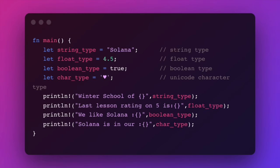We can define variables in Rust using the let keyword. Keep in mind that Rust is a statically typed language, which means the compiler needs to know what type the variables are at compile time. However, we are not explicitly defining the types of the variables here — this is because Rust has something called an inference engine. It not only looks at the type of the value expression during initialization, but also looks at how the variable is used afterwards in the program, so we can define variables without specifying the data type.